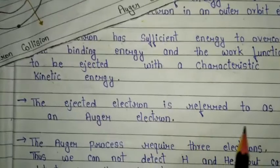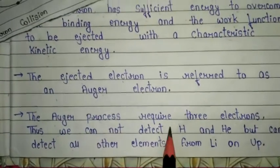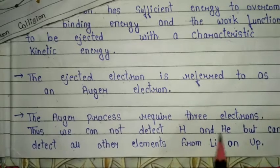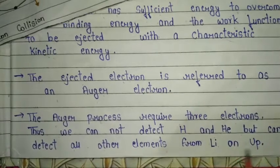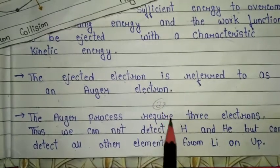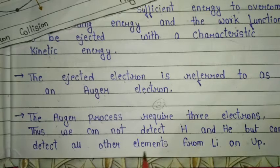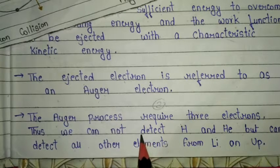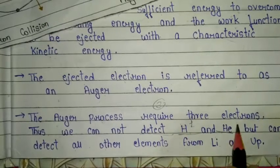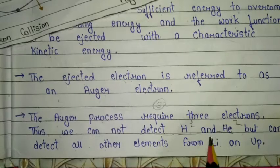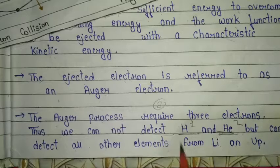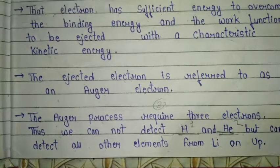The electron ejected from that atom is called the Auger electron. The Auger process requires three electrons. Therefore, we cannot detect hydrogen or helium using this process, but can detect all other elements from lithium onwards. Hydrogen has only one electron and helium has two electrons, so these elements cannot be detected by this process. This is the main point of the principle.